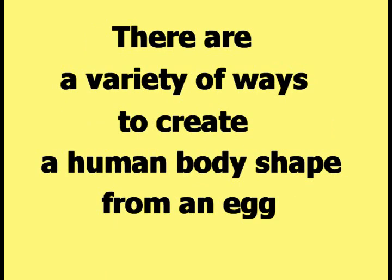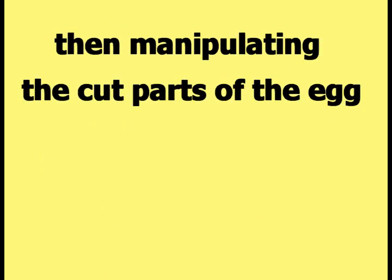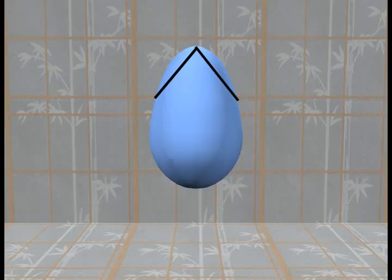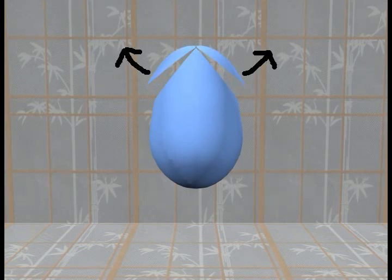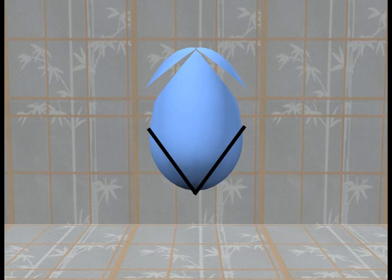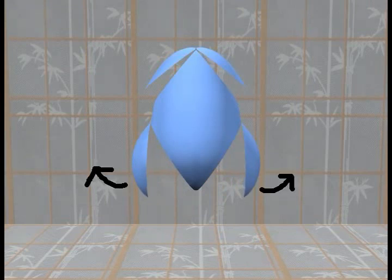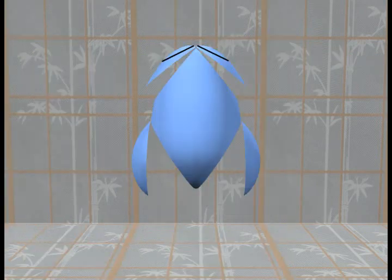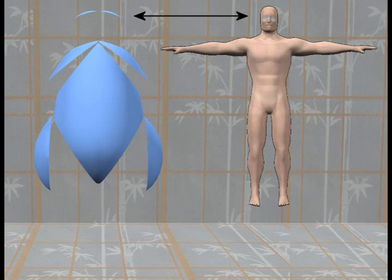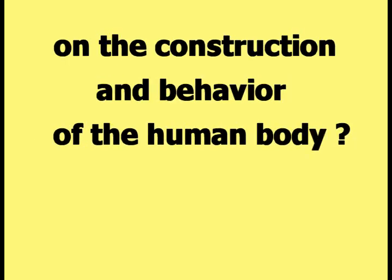There are a variety of ways to create a human body shape from an egg. To make the point of this video, a human body shape will be created from an egg by cutting the egg and then manipulating the cut parts. The first two cuts are made in the upper part of the egg, and the lower part of each cut section is rotated out away from the egg to represent the arms. The same cutting process is then performed on the lower part of the egg to create the legs. The upper part of the egg is cut one more time and the two cut pieces raised upwards to represent the head.